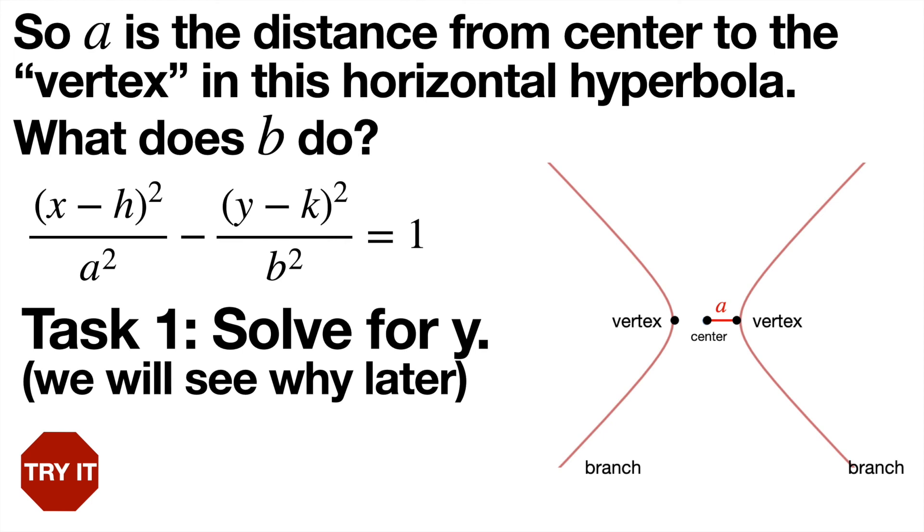So in the previous slide, we saw that a is the distance from the center to what's called the vertex of a hyperbola, because it's the same thing as it would be for an ellipse, the endpoint of the horizontal axis. That distance is a for the ellipse, so it also must be a for this horizontal hyperbola. But we don't know what b does yet. So the first task will get us closer to figuring out what b does, not immediately, but after a few more steps. So task one is take the hyperbola formula and solve for y. It's an algebraic exercise, but also it'll help us discover what b is.